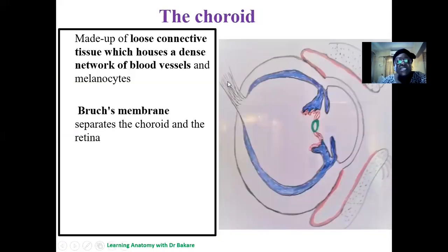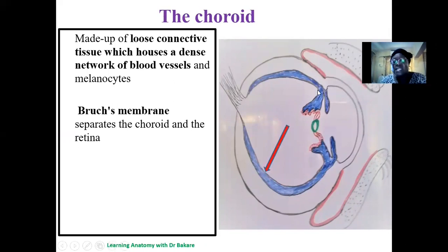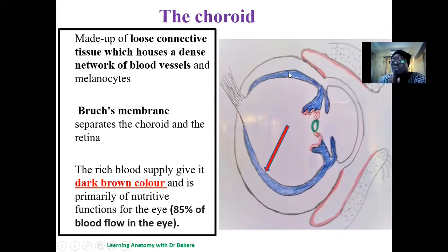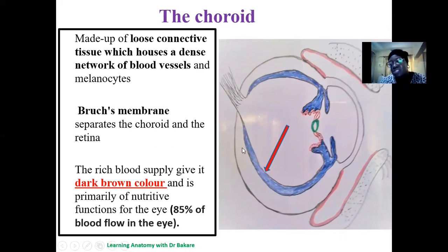The choroid is made up of loose connective tissue lining below the sclera. This structure is rich in blood supply, giving it a dark brown coloration. It provides about 80% of the blood flow to the eye and helps provide nutrients for the structures embedded within the eye.